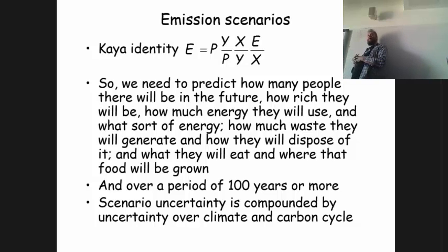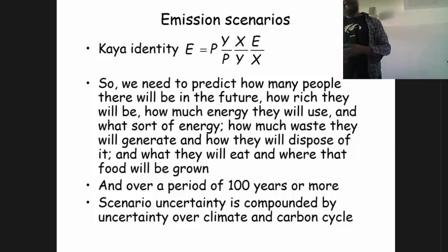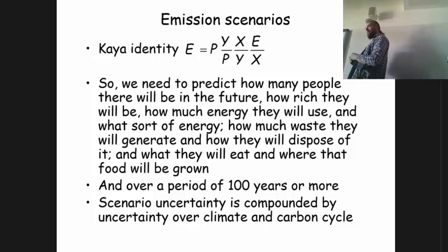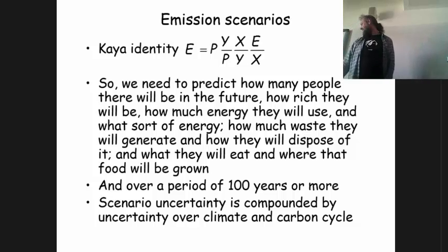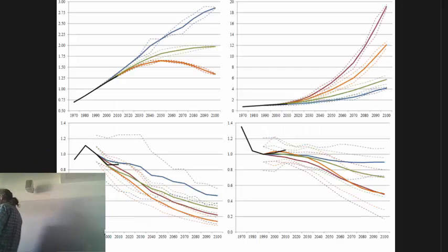So we don't know how many people there are in 2016, let alone predict with confidence the number in 2100. And population is the easy problem. Predicting economic growth is also not easy. This is very, very difficult. People have done it, and these are the scenarios we typically work with.